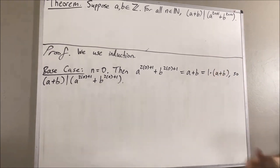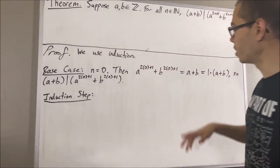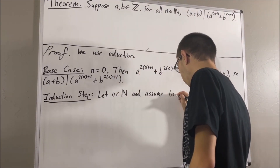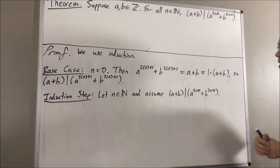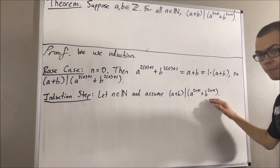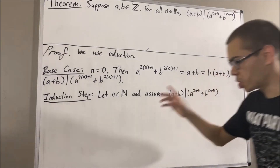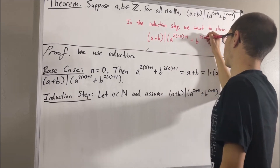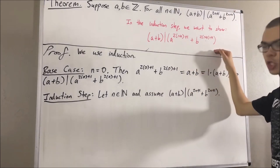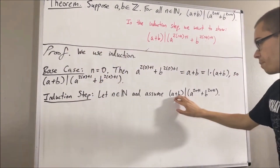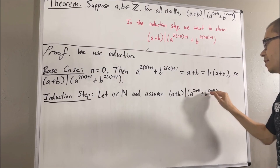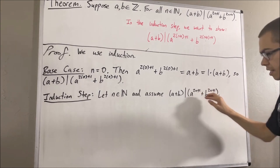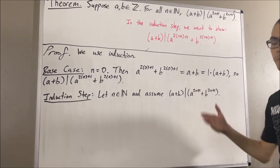Now let's move on to the induction step. In the induction step, we give ourselves an arbitrary natural number n where this is true. The whole goal is to show that this is also true for n plus 1. Since A plus B divides A to the 2n plus 1 plus B to the 2n plus 1, there is some integer K such that A to the 2n plus 1 plus B to the 2n plus 1 equals A plus B times K.